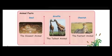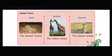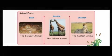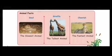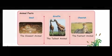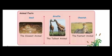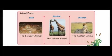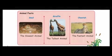Animal Facts — Snail: the slowest animal. Giraffe: the tallest animal. Cheetah: the fastest animal.